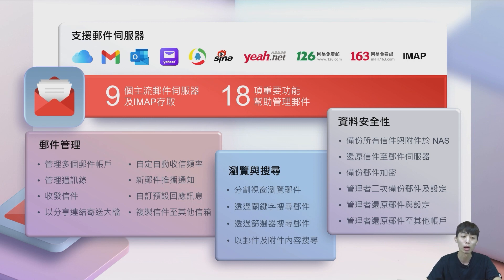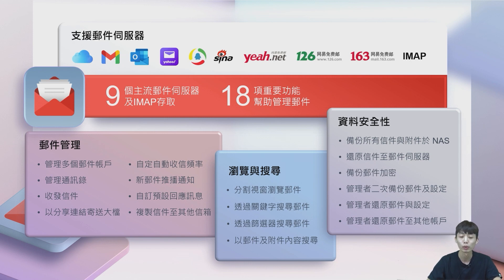你可以使用OAuth的方式取得认证来存取邮件，或者其他邮件伺服器也可以使用IMAP标准协定来做邮件存取。QMail Agent提供的功能包括邮件管理，让你可以收发邮件、搜寻邮件，以及浏览搜寻功能。最重要的就是资料安全性，帮助你把资料备份到NAS当中，确保资料安全，并且可以很方便快速地还原这些资料。